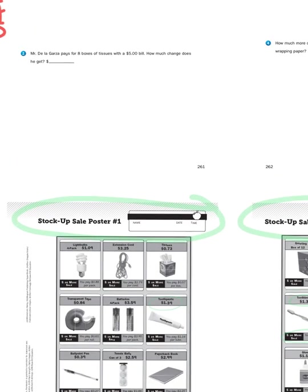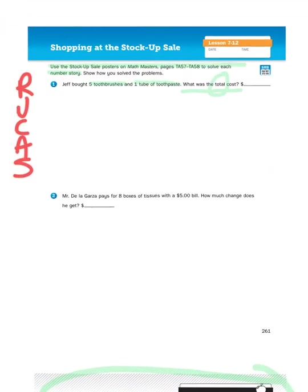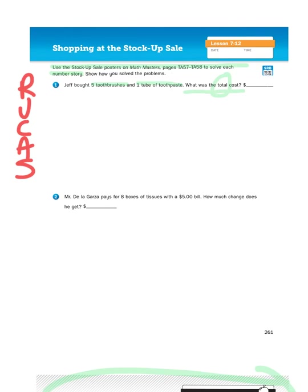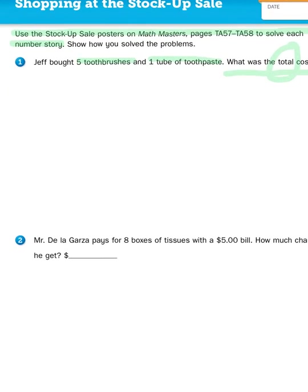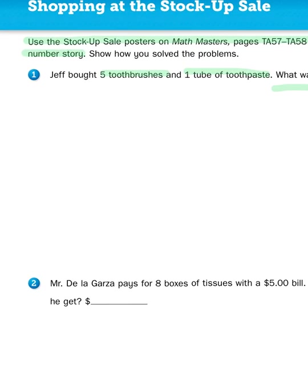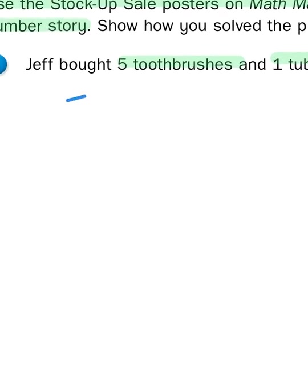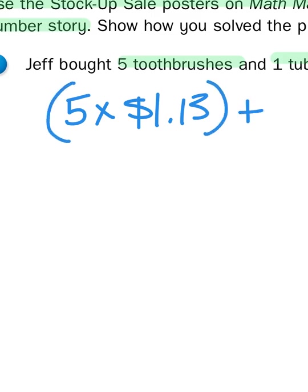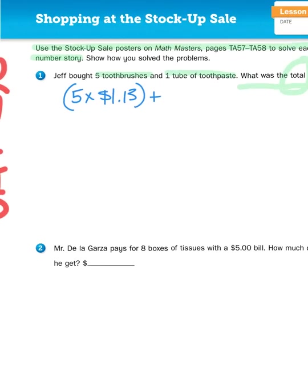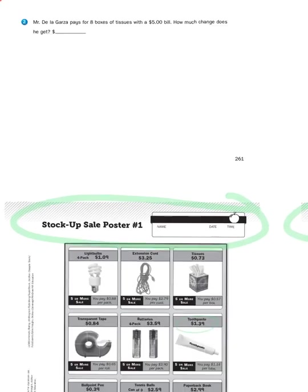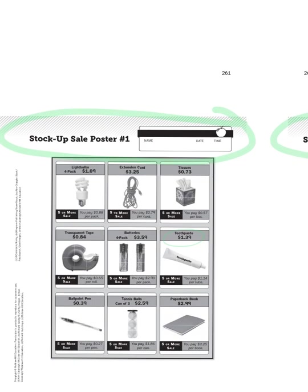And then we have toothpaste that individually is $1.39. So now that we have some prices to work with, let's jump back in. Five toothbrushes, and we know that if we buy five toothbrushes, they will cost $1.13 apiece. And then once we solve that, we're going to add that to the cost of one tube of toothpaste, which was $1.39.